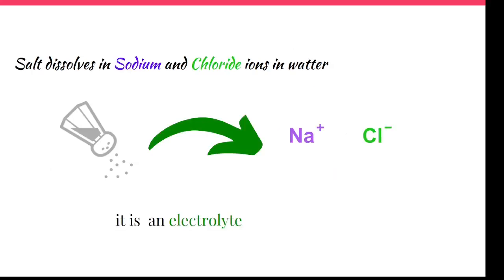Sodium chloride, for example — your table salt — when it dissolves in water, it decomposes into sodium cations and chloride anions, so it is an electrolyte. It is the same if you can melt sodium chloride; it has a very high melting point, but if you melt it, it dissociates into ions. This is why sodium chloride is considered an electrolyte, whereas sugar is not.